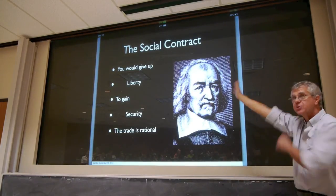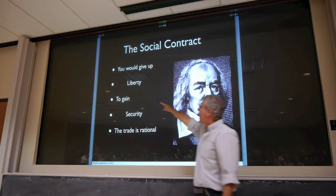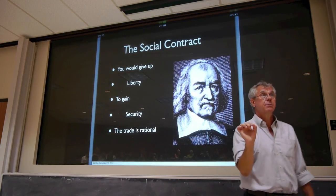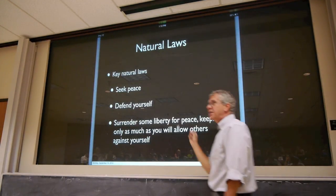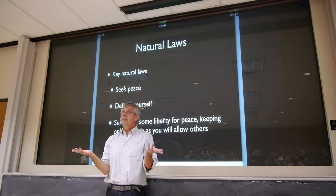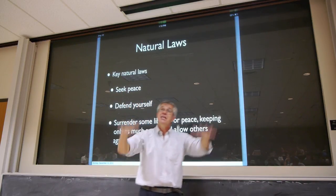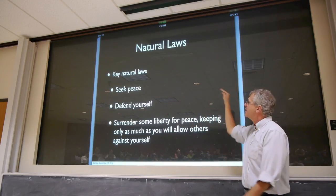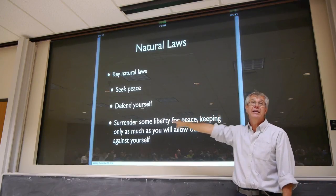Here's the basic picture — here's the contract. I give up a certain amount of my liberty. But in any case, I gain security. I am in such danger in the state of nature, I'm willing to trade some liberty for security. And that would be a reasonable thing for me to do. He says there are some basic natural laws that would govern my behavior in the state of nature.